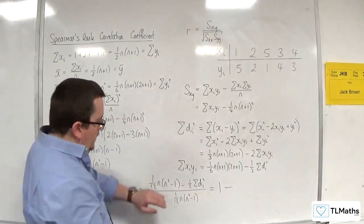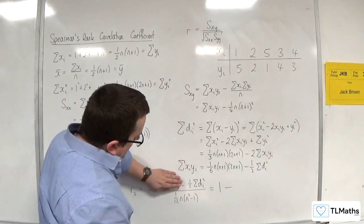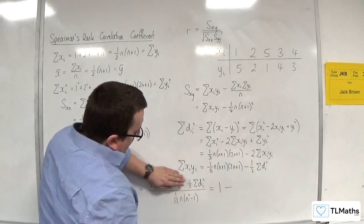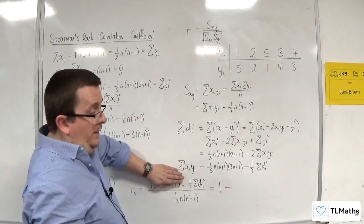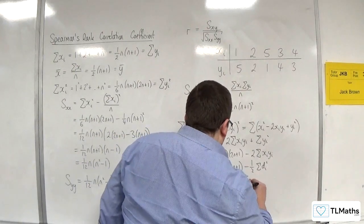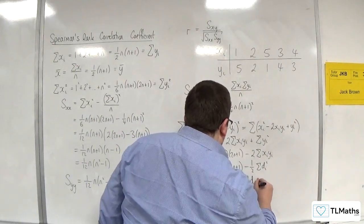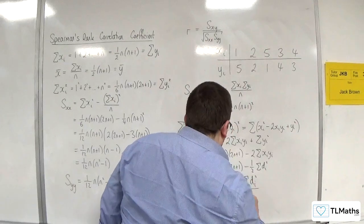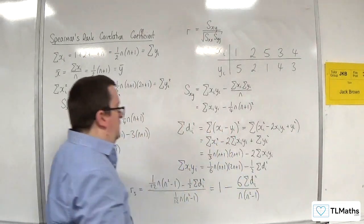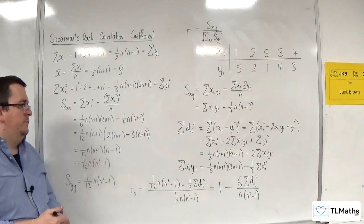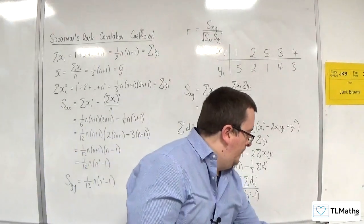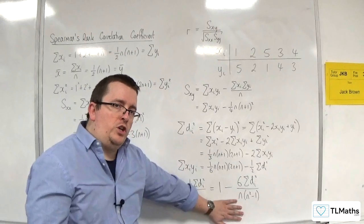Take away: ½ divided by ¹⁄₁₂ is 6, so we have 6 times the sum of Dᵢ² divided by N(N²−1). And so that is Spearman's rank correlation coefficient.